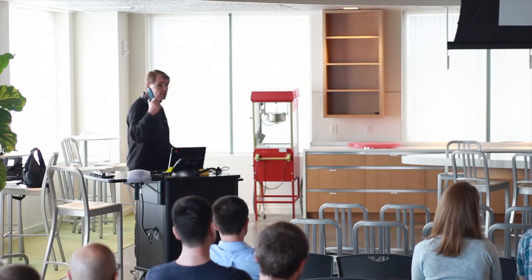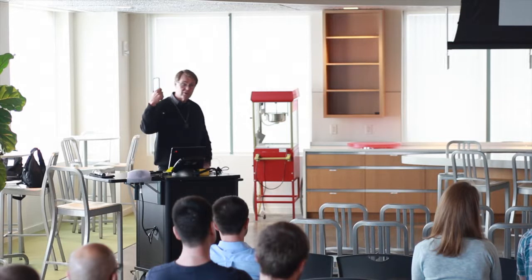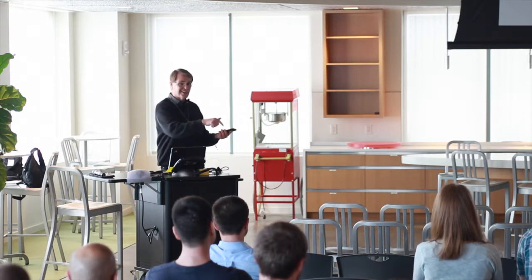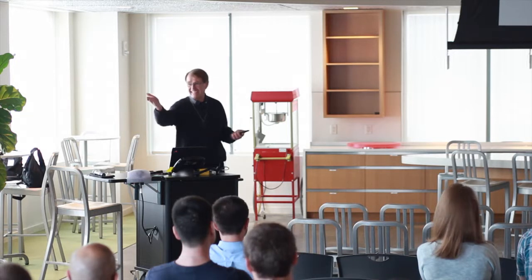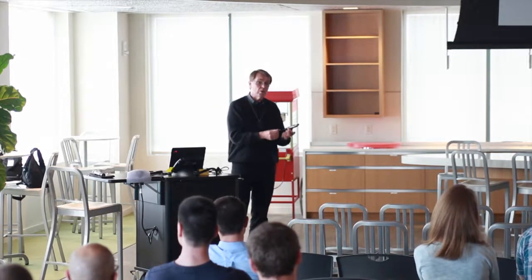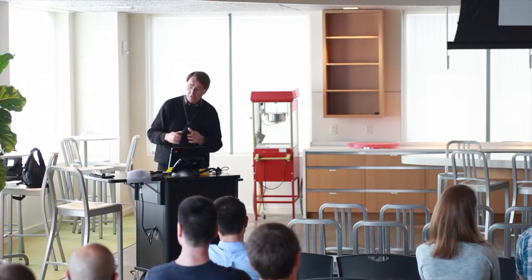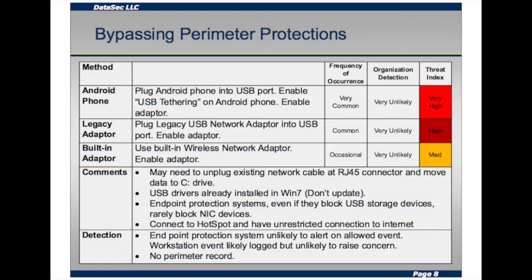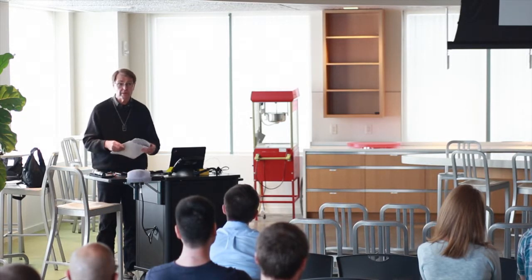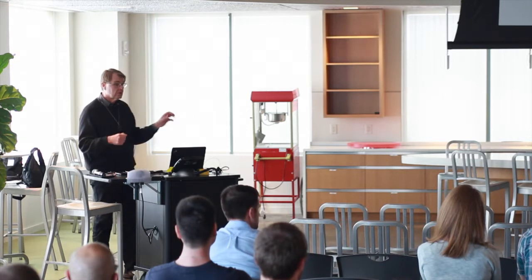The first method is probably the simplest and almost always works: you take your Android phone — this won't work with an iPhone — plug it in, and it shows up as a network adapter. You double-click on it and that network adapter magically turns into a USB device. What's fascinating is that this bypass works even in the presence of endpoint protection systems that have intentionally tried to lock down USB storage devices.